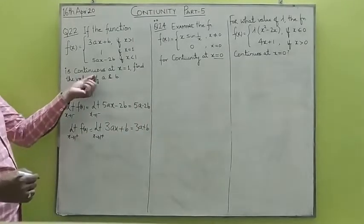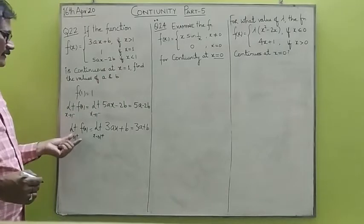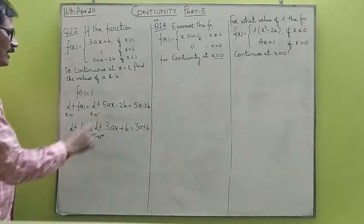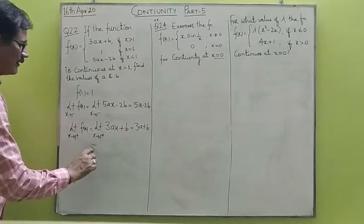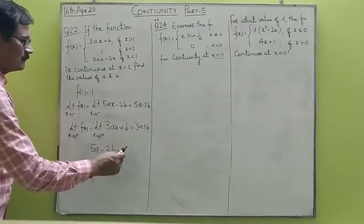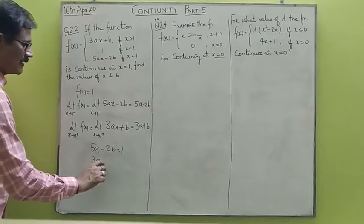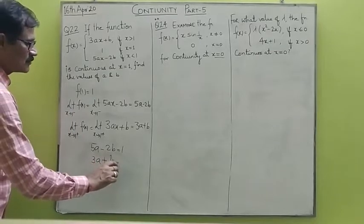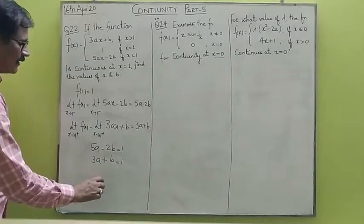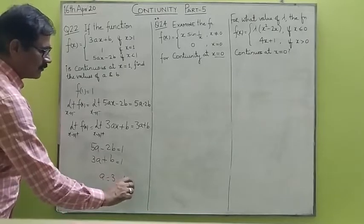Since the function is given to be continuous at x equals to 1, the right hand limit, the left hand limit, and the value of the function — all three must be equal. Equating them we get two equations: 5a minus 2b must equal 1, and the right hand limit 3a plus b must also equal 1. Solving these simultaneously, a turns out to be 3 and b turns out to be 2.